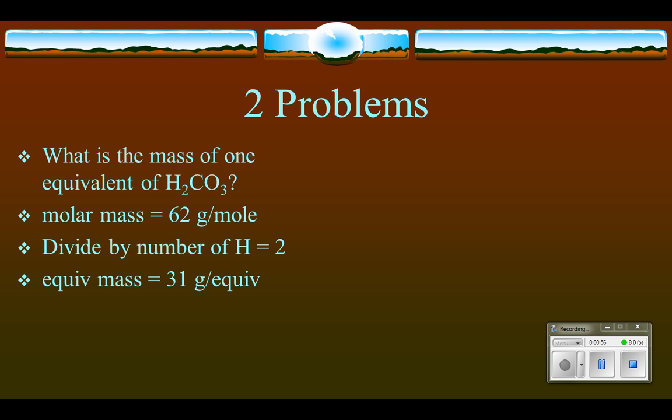So by dividing by the number of hydrogens, we change from moles to equivalents. So that's all there is to finding the mass of an equivalent. You find the molar mass, you divide by the number of hydrogens.